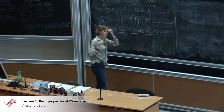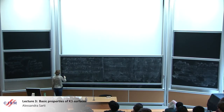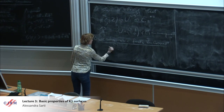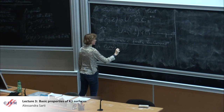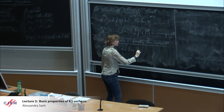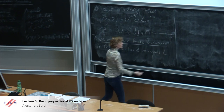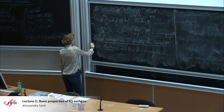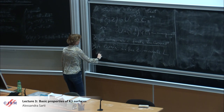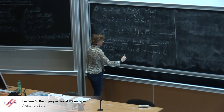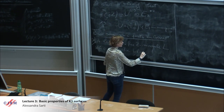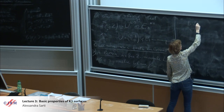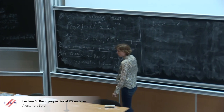Just making a small parenthesis from K3 surfaces. I will take L, a free Z-module, or a lattice. L is what we have seen for H2 — no torsion, it's a free Z-module — with a symmetric bilinear form B from L × L to Z. So it always comes with the bilinear form.